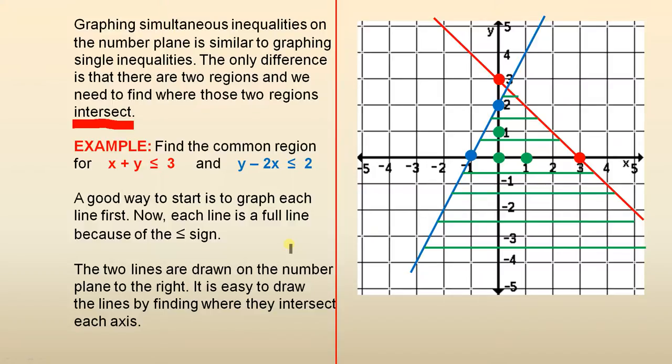The two lines are drawn on the number plane to the right. It is easy to draw the lines by finding where they intersect each axis. I'm quite confident you know how to draw each of these lines. Now, let's find the common region.